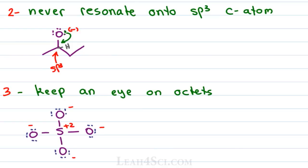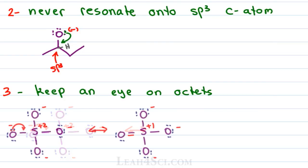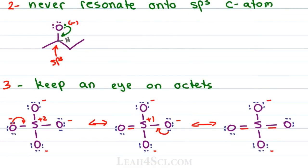For example, in the sulfate ion, sulfur already has a complete octet, but I am allowed to bring the electrons from oxygen and resonate them towards sulfur to form a pi bond. That's because sulfur is in period three — it's a larger atom that can hold as many as twelve electrons — so we don't have the issue of violating the octet; it's an exception to the octet rule. I can do this one more time, taking sulfur from ten electrons to twelve, giving me three valid structures. If the atom is an exception to the octet rule, that's okay. If it's not, make sure there's something else you can kick out, potentially by breaking a pi bond.